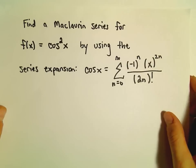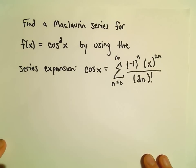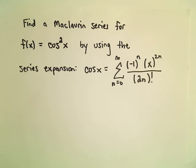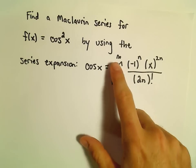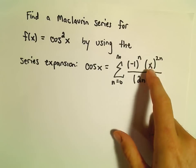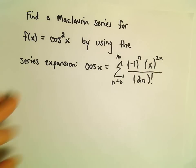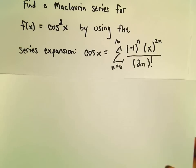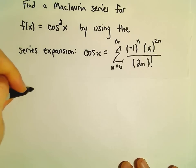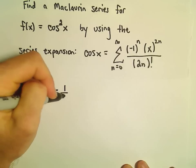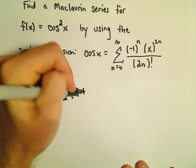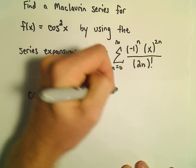One more example of finding a new series expansion based on a known series expansion. We're going to find a Maclaurin series for cosine squared x by using the expansion for cosine x, which is the series from n equals 0 to infinity of negative 1 to the n, times x raised to the 2n, over 2n factorial. We'll also use a trig identity: cosine squared x equals one half times (1 plus cosine of 2x).